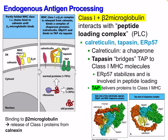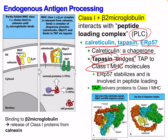Next, class 1 MHC and beta-2 microglobulin form a complex that interacts with the peptide loading complex (PLC). The PLC contains three things: calreticulin, tapasin, and ERp57. Calreticulin is a chaperone; tapasin bridges TAP to the class 1 MHC molecules; ERp57 stabilizes and is involved in peptide loading. TAP then delivers peptides to the class 1 MHC. Binding of beta-2 microglobulin causes the release of calnexin, and we get our PLC complex of calreticulin, ERp57, and tapasin along with TAP.